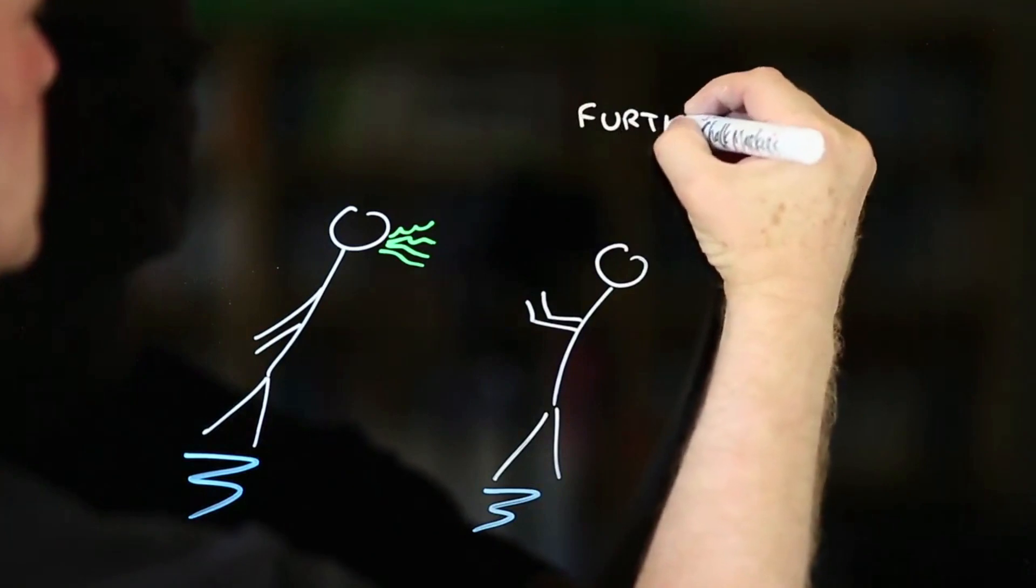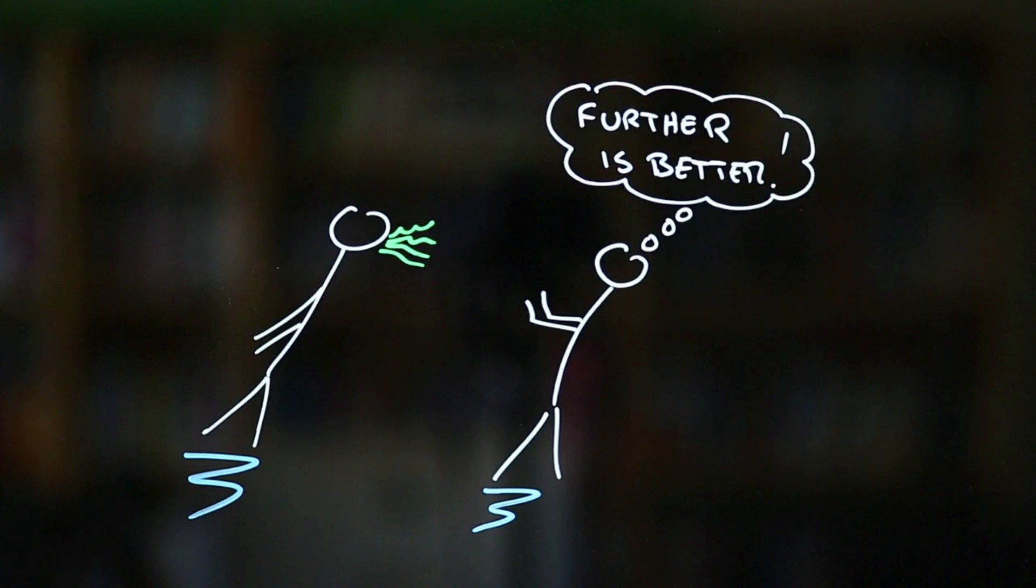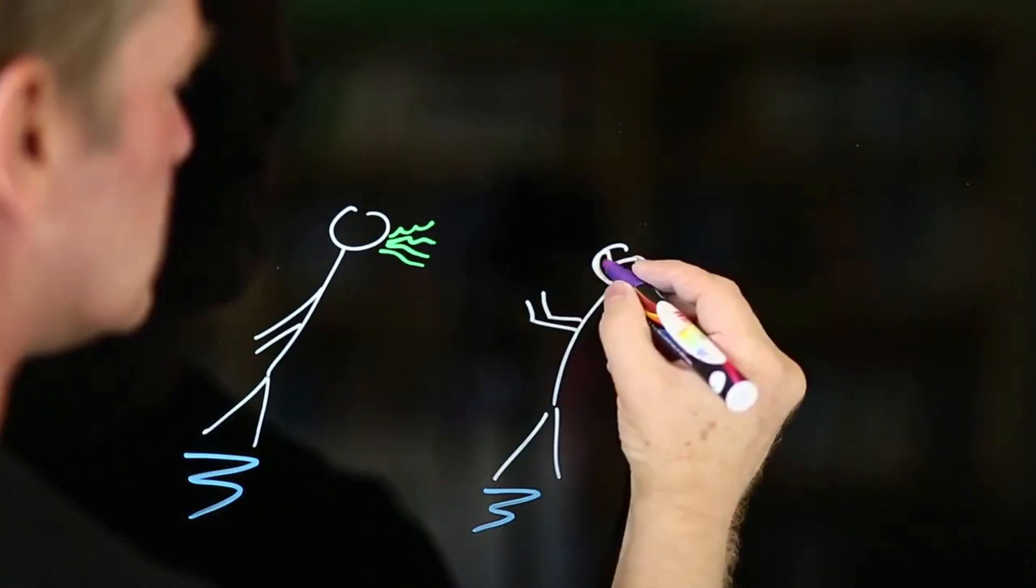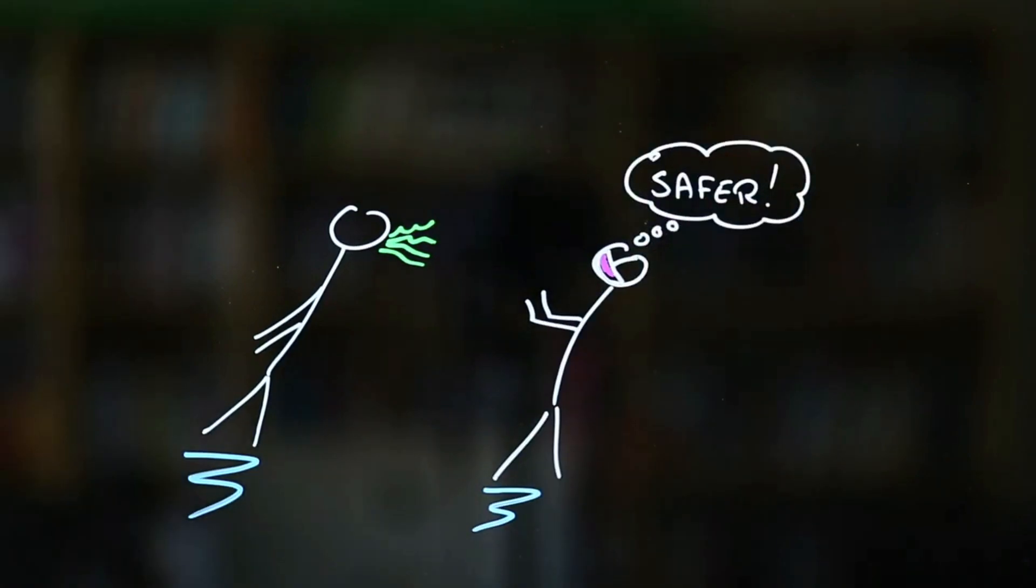Next, you can avoid standing so close to others that you end up inhaling their potentially contaminated breath. Even though we don't know what a safe distance is in this case, the rule of thumb that further is better works pretty well here. You can also wear a mask. It's a pain, I know, but it will significantly reduce the risk of you ending up smelling like a surfeit of hyper-stressed skunks.